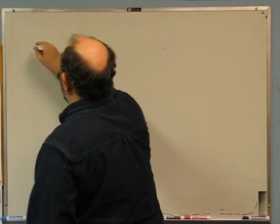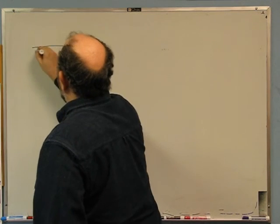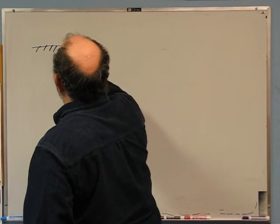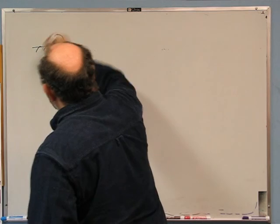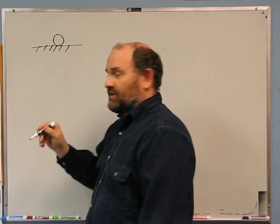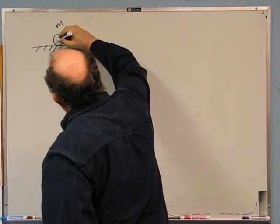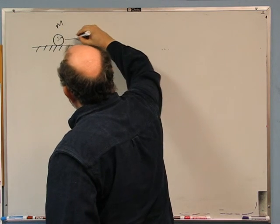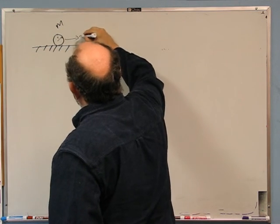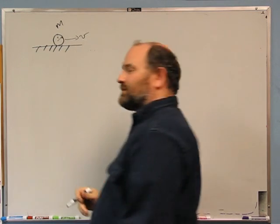What is the angular momentum of a pool ball of mass m and radius r that is rolling without slipping at speed v? We have a pool ball on a ground. If it's rolling without slipping, it's got to be rolling on something. It has mass m, radius r, moving at speed v, and it's rolling without slipping.